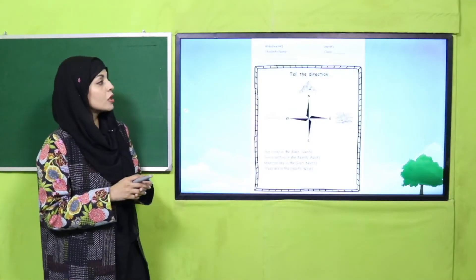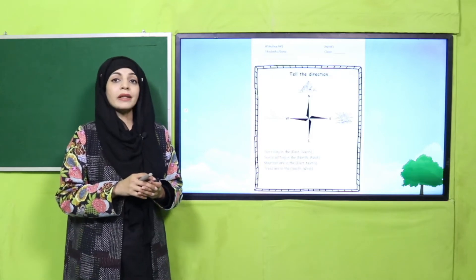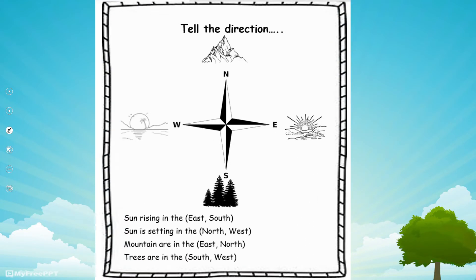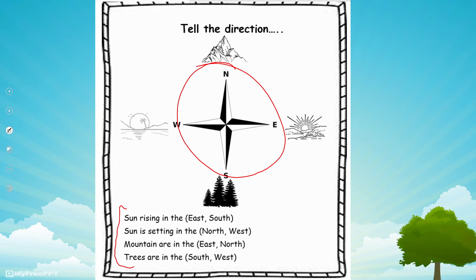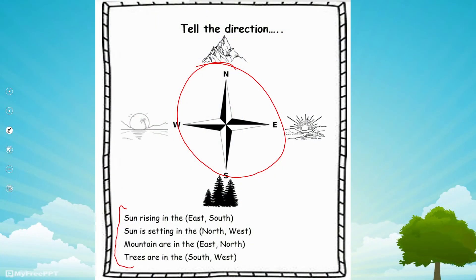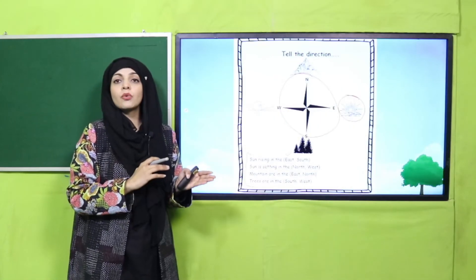Now we move forward to Worksheet number one. Write your name and class on the top of the worksheet. You can see four directions on the worksheet with different things on each direction. Statements are written and you have to select the correct direction for each object. For example — sun rising in the east: is it east or south? The sun rises in the east, so east is the correct option. Do the rest by yourself.